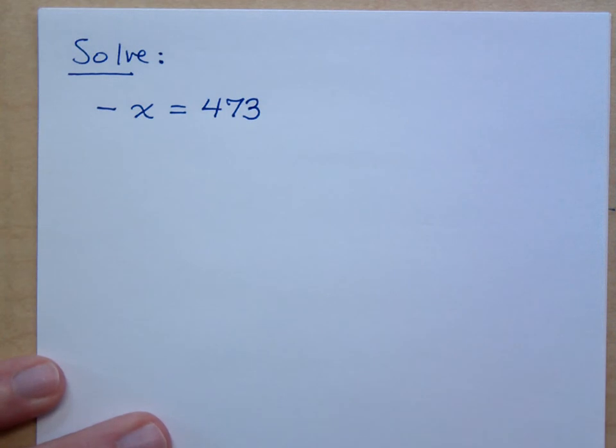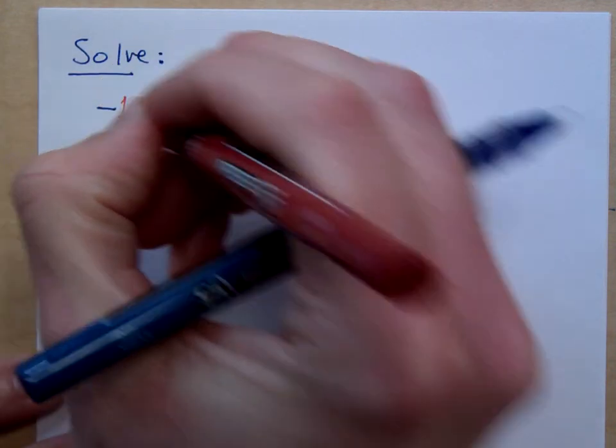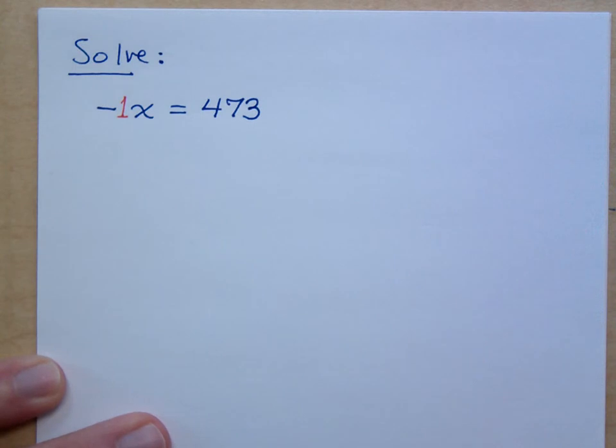Remember, when we are solving for x, or whatever variable it is, we desire to have the coefficient to be a positive 1. What's the coefficient for this variable? It's understood to be a negative 1. I don't want that. So how do I get rid of a coefficient?